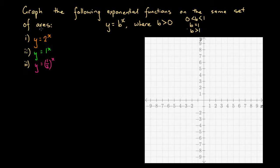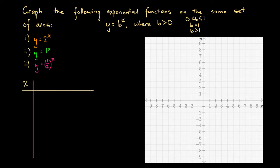We're going to examine the behavior of each graph by graphing these three exponential functions. To construct each graph, we'll draw up a table of values and examine five different x values: minus 2, minus 1, 0, 1, and 2, just to get an idea of what each graph looks like.